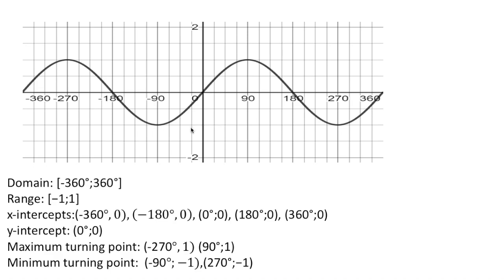It is very important to memorize the following information. The domain is the x-values that the function covers — this function's x-values start at minus 360 up to 360, with square brackets meaning we include both minus 360 and 360. The range is the y-values: the highest value for y is 1 and the lowest is minus 1, so the range is from minus 1 to 1. The graph doesn't go above 1 or below minus 1.